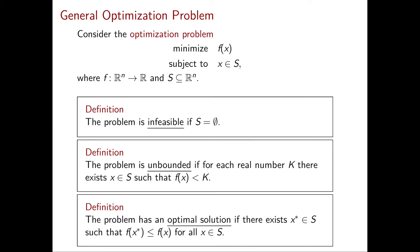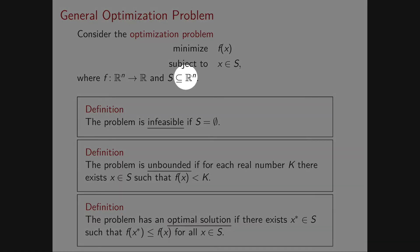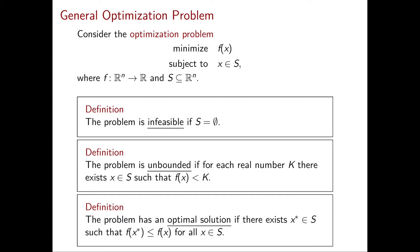I want to start this chapter by explaining why linear programming is such a special optimization problem. Throughout this course we will see several fundamental properties of linear programming problems, and I want you to know that general optimization problems don't always have these properties. To see this, let's start by looking at a general optimization problem: minimize a function f of x where x is constrained to be in a set S, a subset of R^n, so f maps R^n to R.